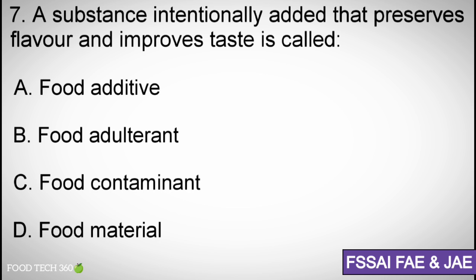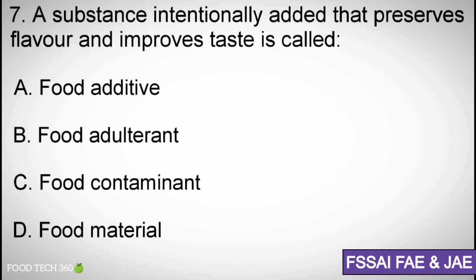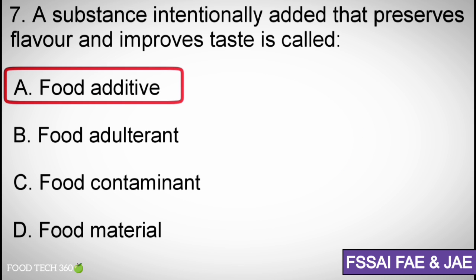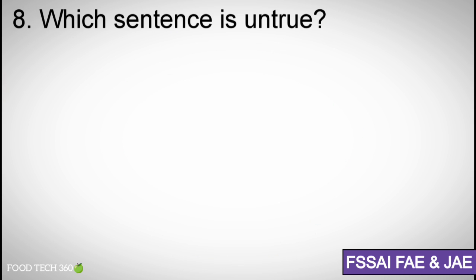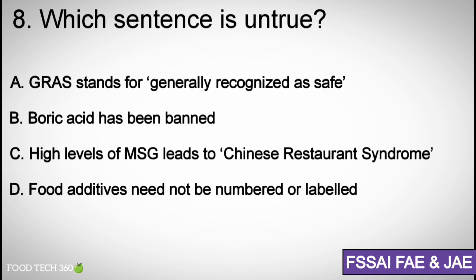Question number seven: A substance intentionally added that preserves flavor and improves taste is called — Options: A) Food additives, B) Food adulteration, C) Food contaminant, D) Food. Correct answer: A) Food additives. Question number eight: GRAS stands for Generally Recognized As Safe; boric acid has been banned; high levels of MSG leads to Chinese Restaurant Syndrome; food additives need to be numbered or labeled.